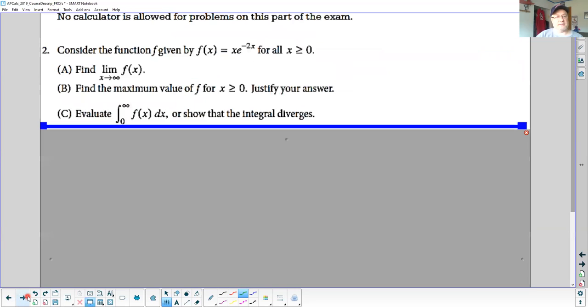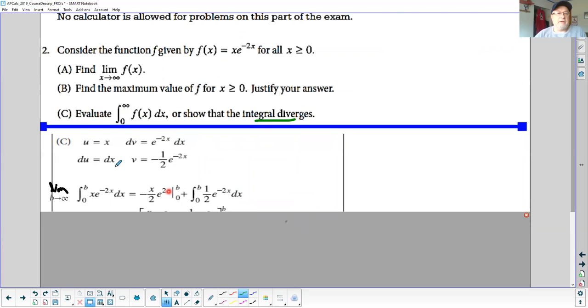When we move to part C, this is a challenging part of this problem. This is an improper integral, so you need to evaluate it or show that it diverges. How do we do that? The first way is to figure out how to take the anti-derivative. You might think u substitution. If u equals negative 2x, your du is negative 2. There's no way to get rid of this x, so that's not the way to go.